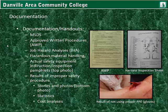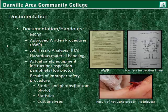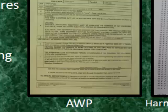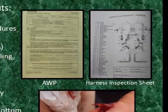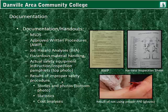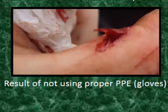That brings us to documentation. Documentation and handouts include material safety data sheets, approved written procedures called AWPs or OPS, job hazard analyses, hazardous material handling, and actual safety equipment and instruction inspection pamphlets. Here we see the AWP — approved written procedures for work on a particular turbine — and an inspection pamphlet for a fall protection harness. The results of improper safety procedures are shown here: in the bottom photo, a result of not using the proper PPE — in this case, just gloves — is a slight gash in the thumb. Nothing too serious, but it could have been prevented simply by wearing gloves.